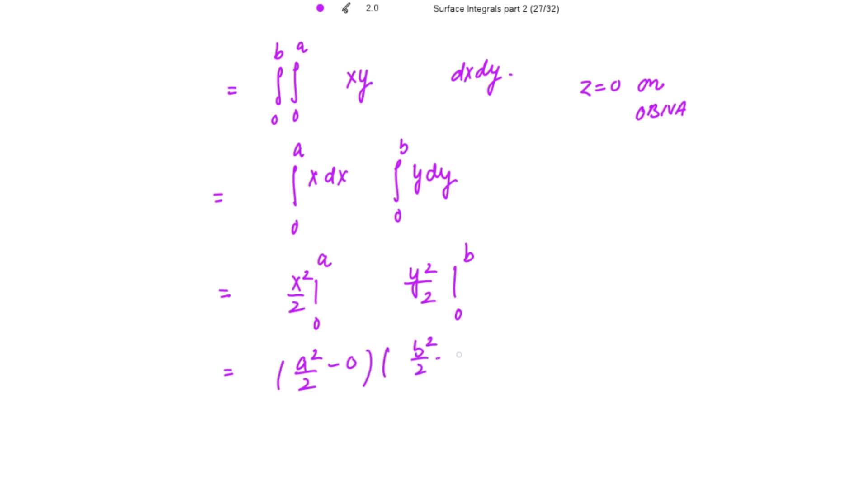Integrating with respect to x gives x²/2 from 0 to a, and integrating with respect to y gives y²/2 from 0 to b. This evaluates to (a²/2)(b²/2) = a²b²/4. Marking this as result (1*).